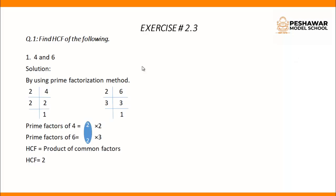Exercise number 2.3, question number 1. Find HCF of the following. Part number 1: the numbers are 4 and 6. It means that we have to find the HCF of 4 and 6. Solution by using the prime factorization method.